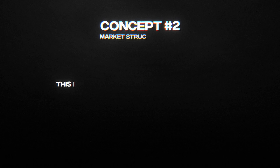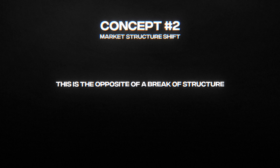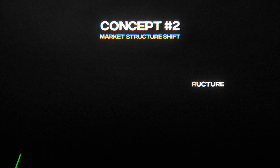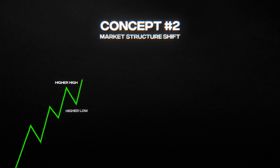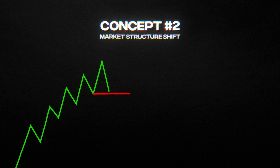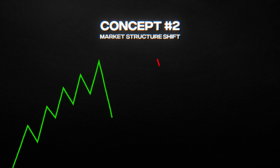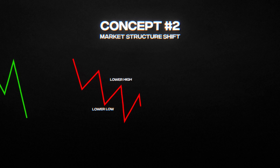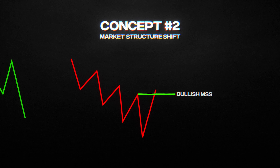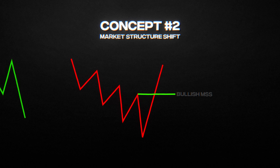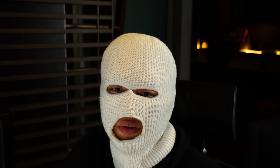The second concept is called market structure shift, which is the opposite of break of structure. In an uptrend, price creates higher highs and higher lows, and when the higher low breaks, this is called a bearish market structure shift. Similarly, in a downtrend, price creates lower highs and lower lows, and when a lower high breaks, this is called a bullish market structure shift. Make sure to rewatch this part of the video to fully understand the difference between the two.